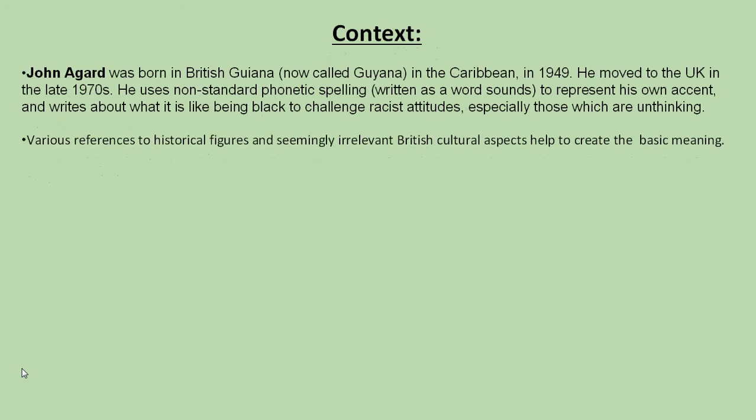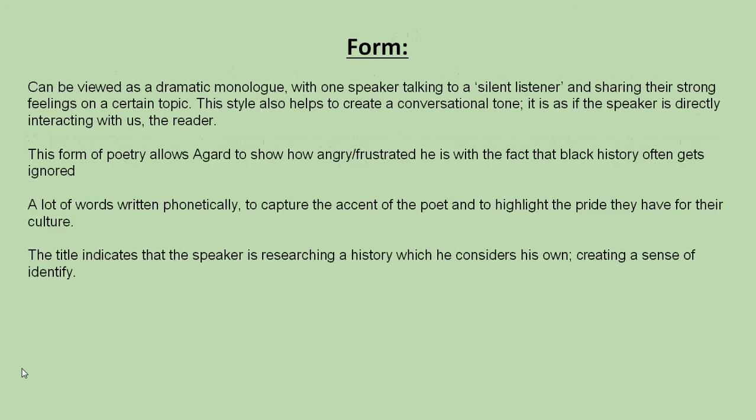Context: John Agard is a British-born Guyanese poet, born in the Caribbean in 1949, who has worked across the UK. He deliberately uses non-standard phonetic spelling to represent his own accent and help create his own identity. There are also various references to historical figures and irrelevant British cultural aspects to help create that basic meaning we've already referred to.